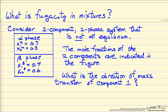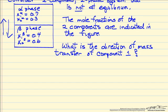Does component one move in this direction, or does it move in this direction, and how do we determine that? The fact that the mole fractions are not equal is not enough to tell us whether or not it's in equilibrium. The mole fractions are not going to be the same in equilibrium. What determines the direction of mass transfer is the chemical potential of component one in the alpha phase and the beta phase.